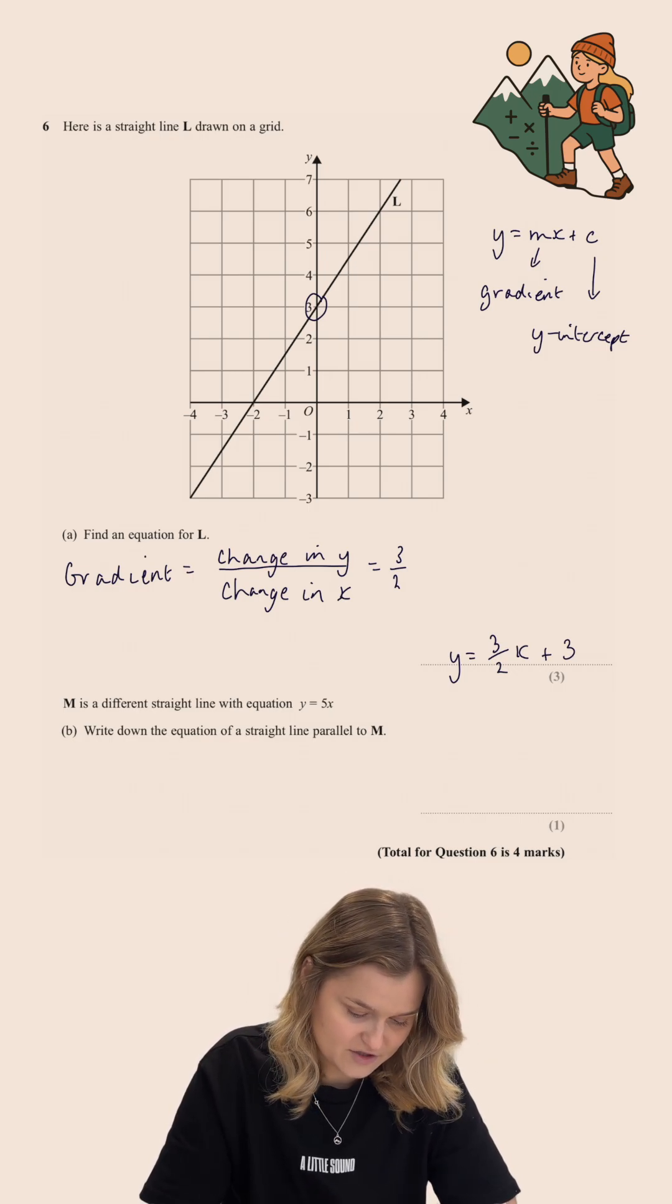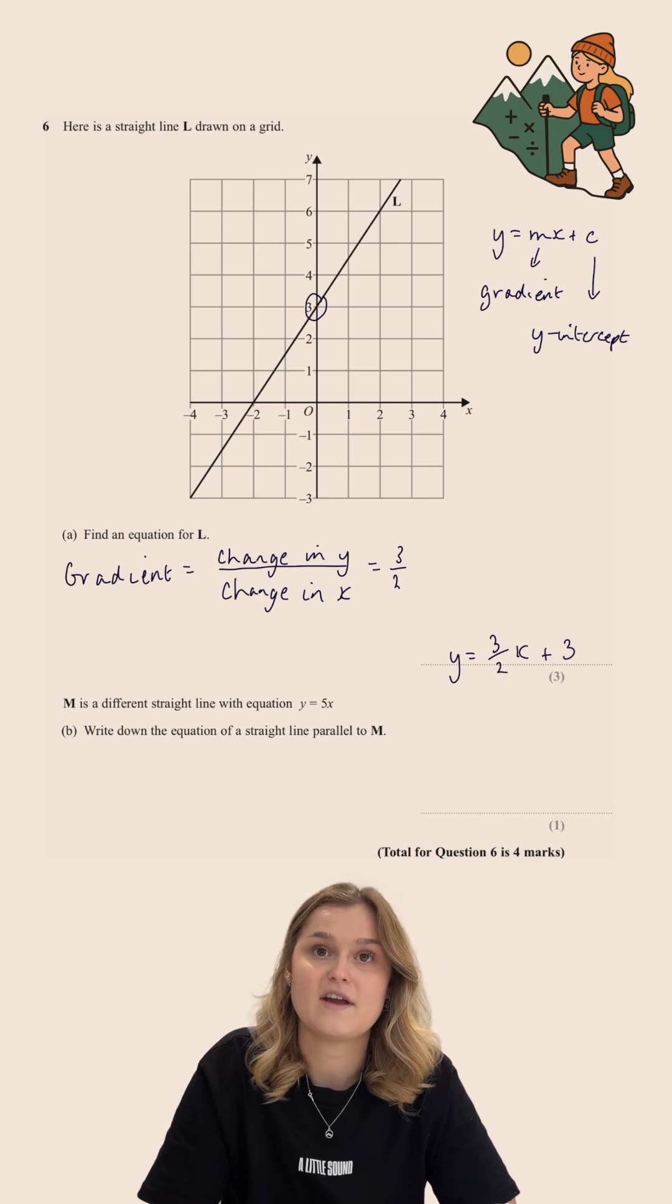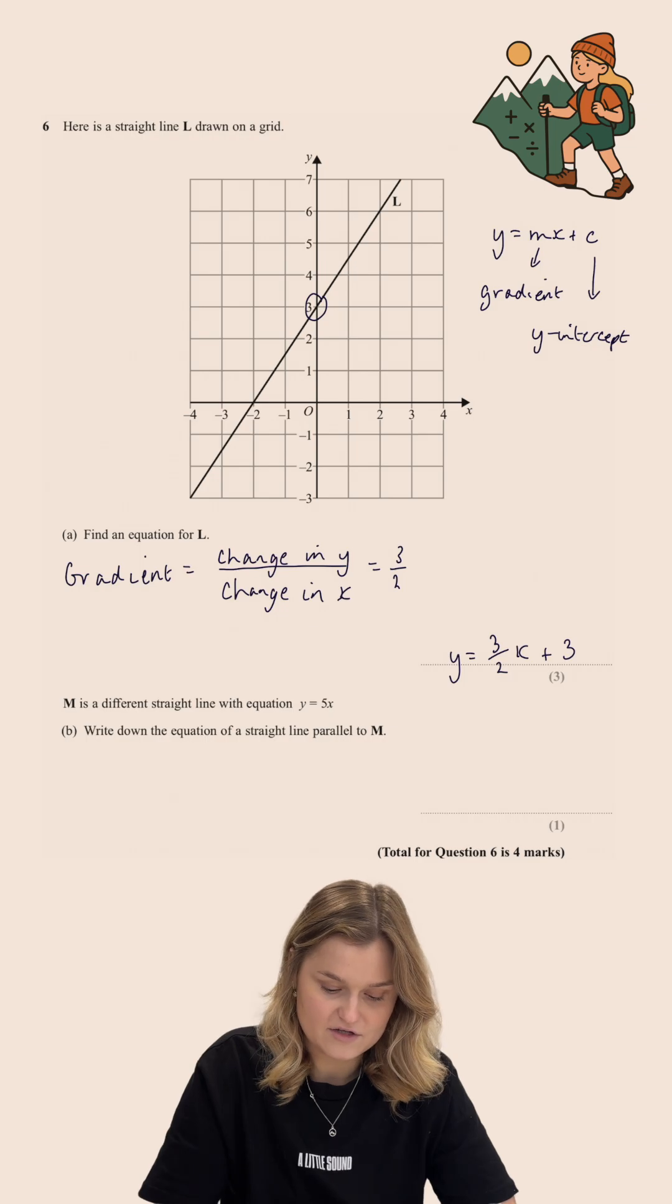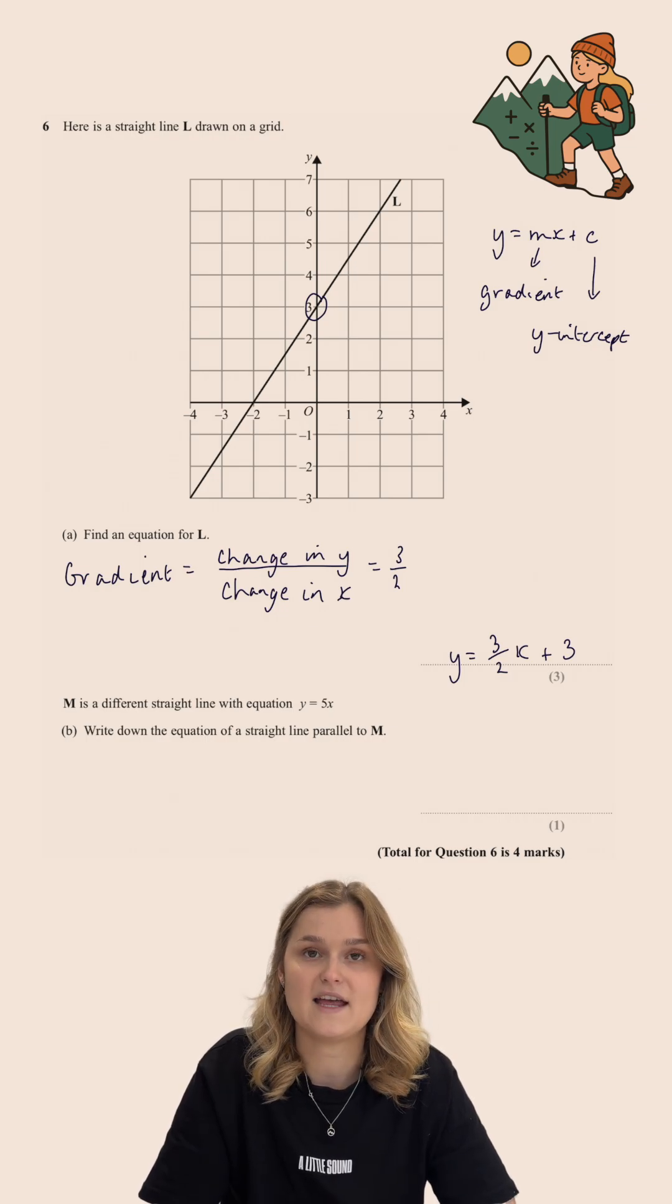Now, part B of this question says M is a different straight line with equation Y equals 5X. And we want to write down the equation of a straight line that is parallel to M.